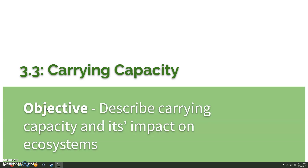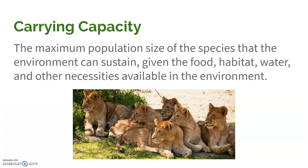In 3.3, we're going to talk about carrying capacity as well as impact on ecosystems. Carrying capacity is the maximum number of individuals of a specific species in a specific population that the environment can sustain. When we look at what that number is, we look at how much food is available, how much space is available versus how much they need, how much water is available, and other things like the number of mates or nesting sites. That's going to determine how many individuals can survive in that area.